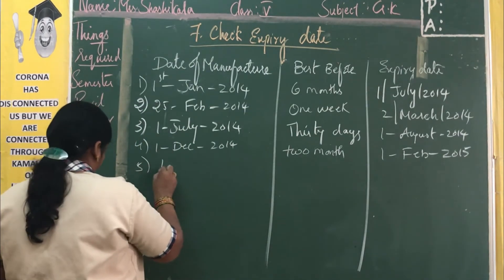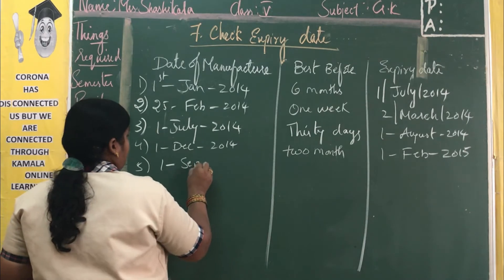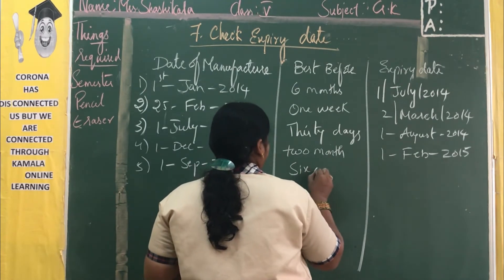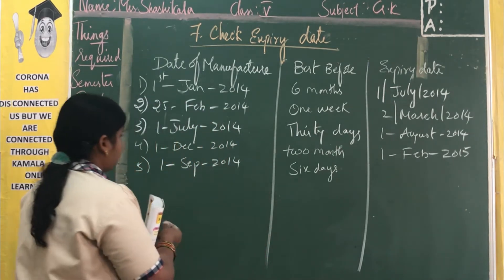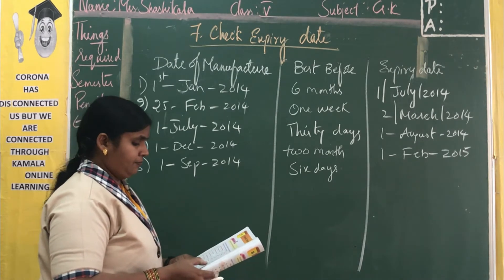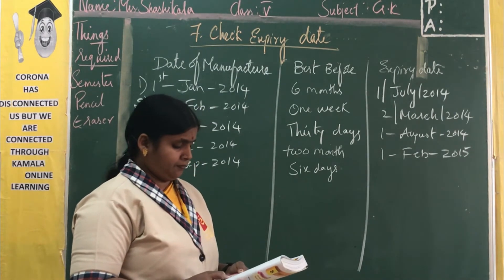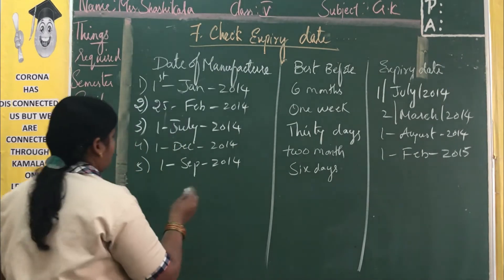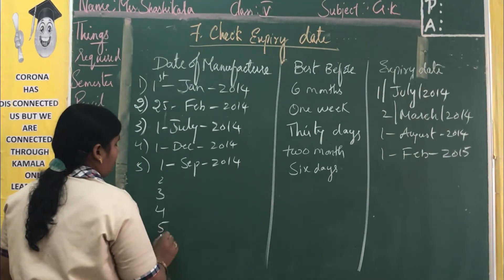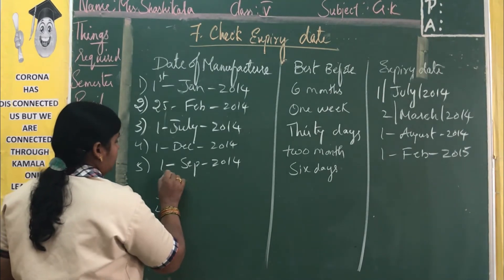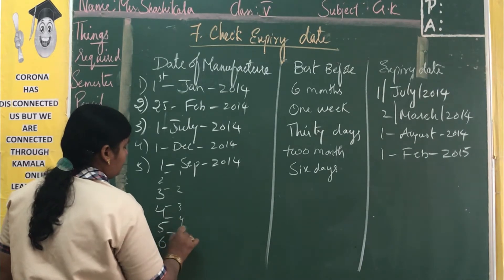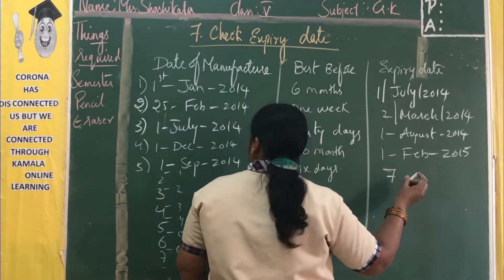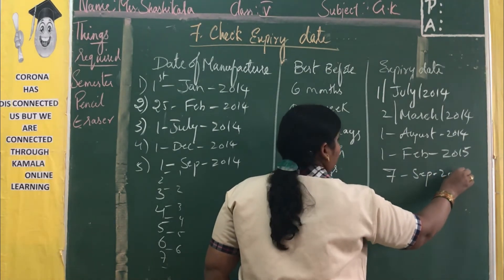Fifth one: 1st September 2014, best before 6 days. Counting from 1st: 2, 3, 4, 5, 6 — this is 1 day, 2, 3, 4, 5, and 6. So the best before will be 7th September 2014.